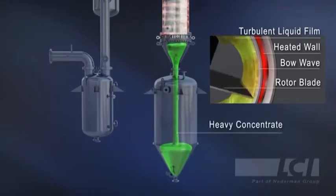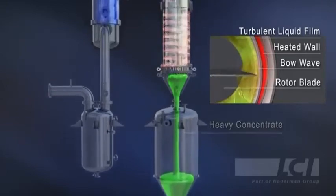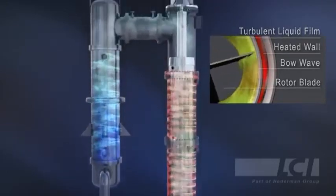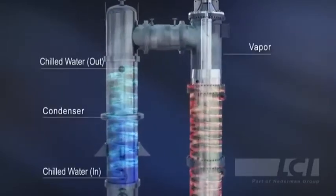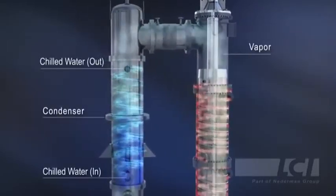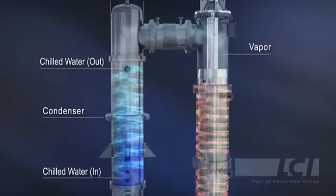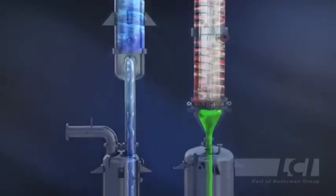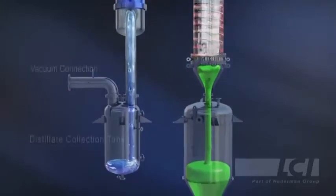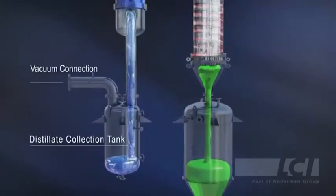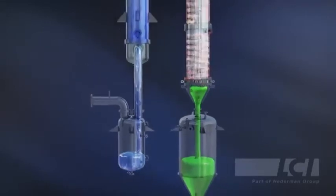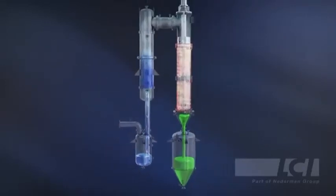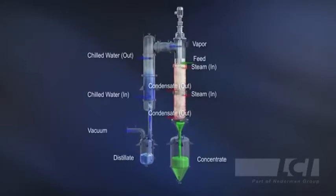The heavy concentrate of low volatile components will drop to the concentrate collection tank and the high volatile components will become vapor phase and rise upward and flow to the condenser. The condenser will condense the vapor and it will drop to the distillate collection tank. This is how our equipment, Thin-Film Evaporator, works.